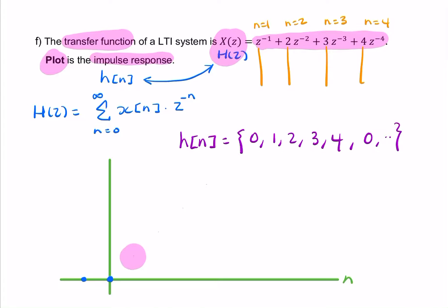We have a 0 at n equals 1. We have a 0. Sorry, a 1 at n equals 1. A 2 at n equals 2. A 3 at n equals 3. A 4 at n equals 4.